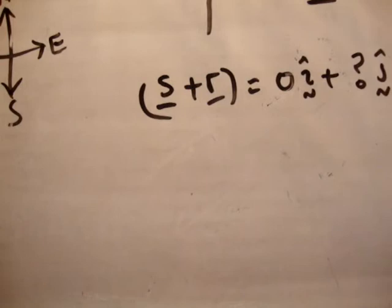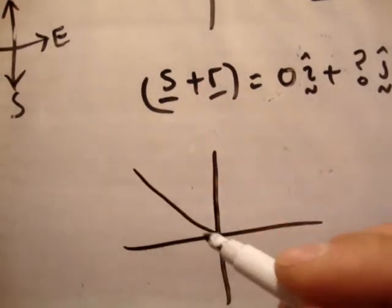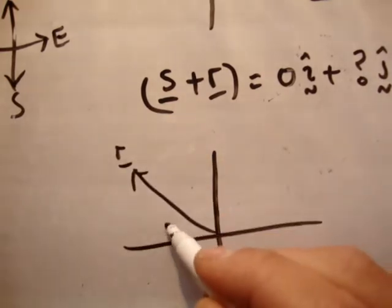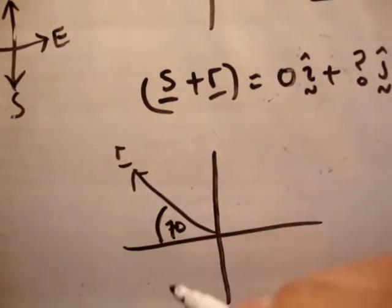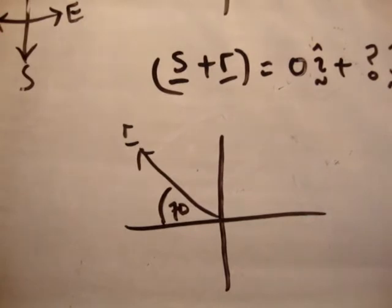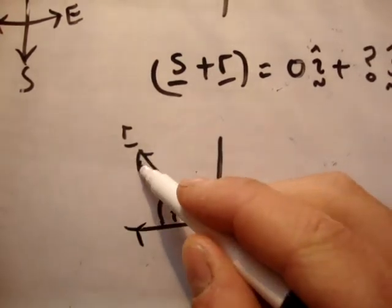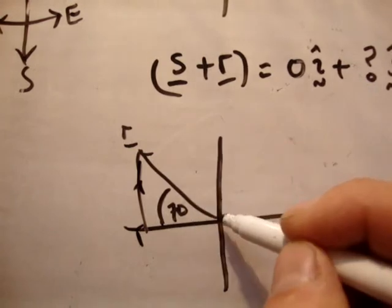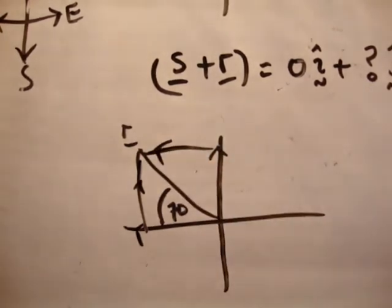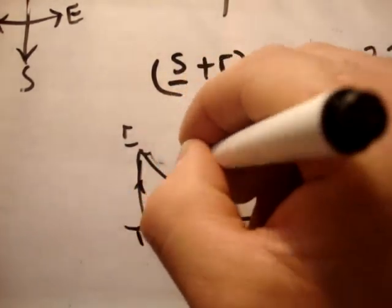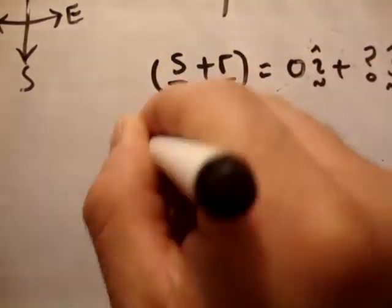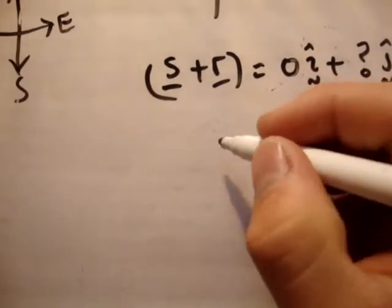First of all, we have the vector r — it's at 70 degrees. We just need to resolve r and put it into its component vectors, because at the moment it's a resultant vector. We need to resolve it, and we've done this plenty of times. We'll say it's this vector plus this vector.